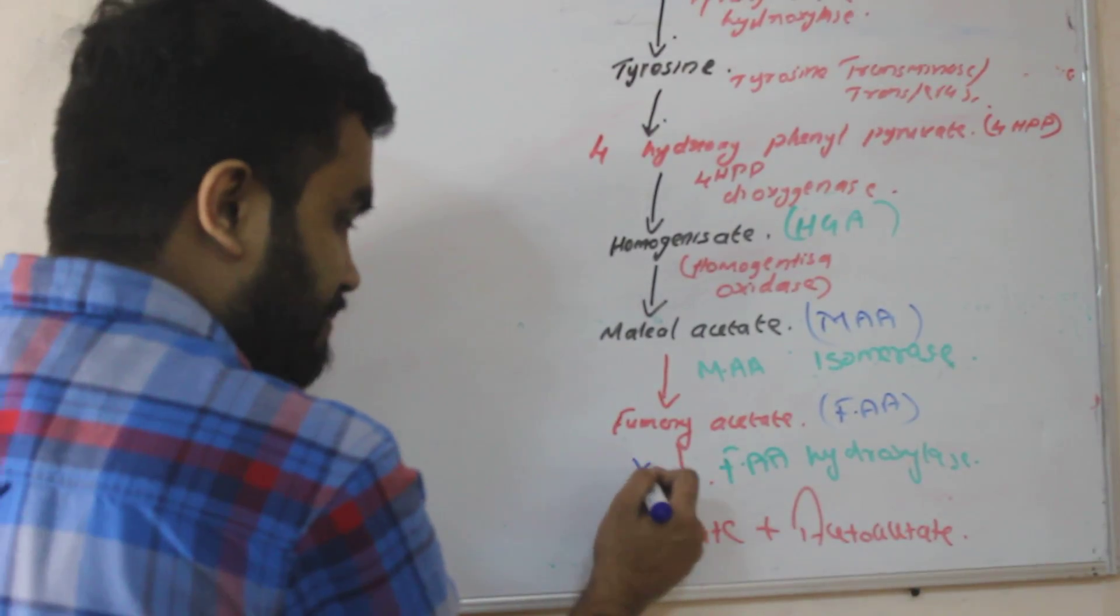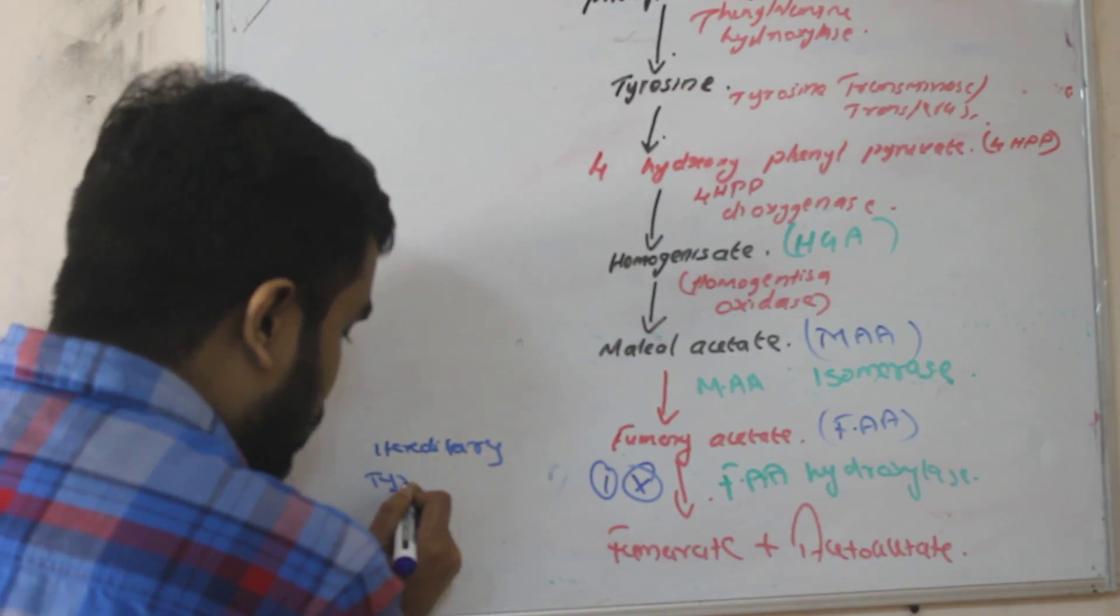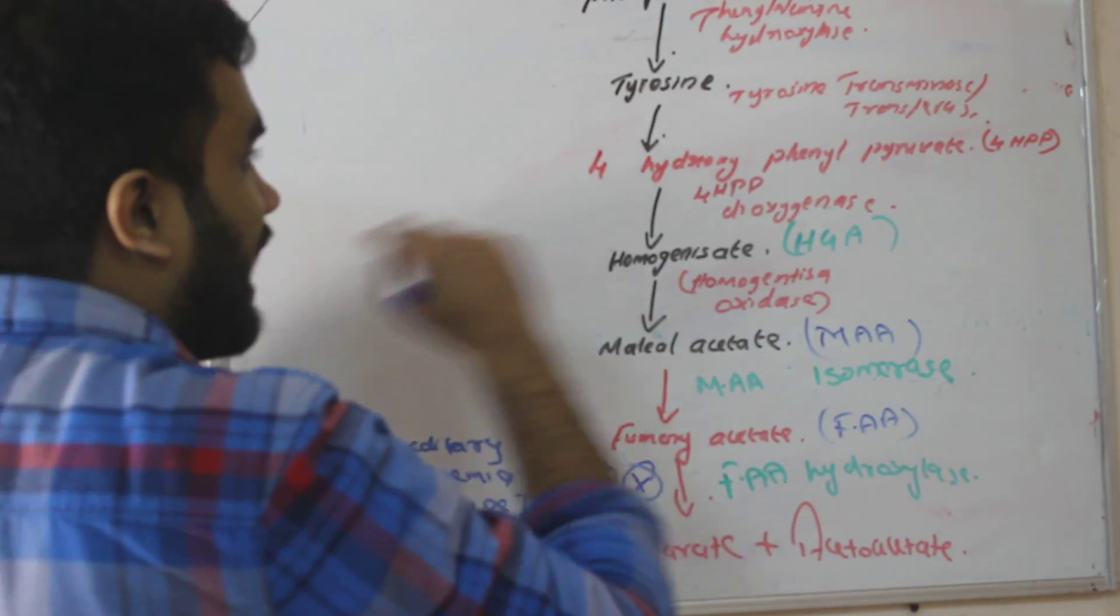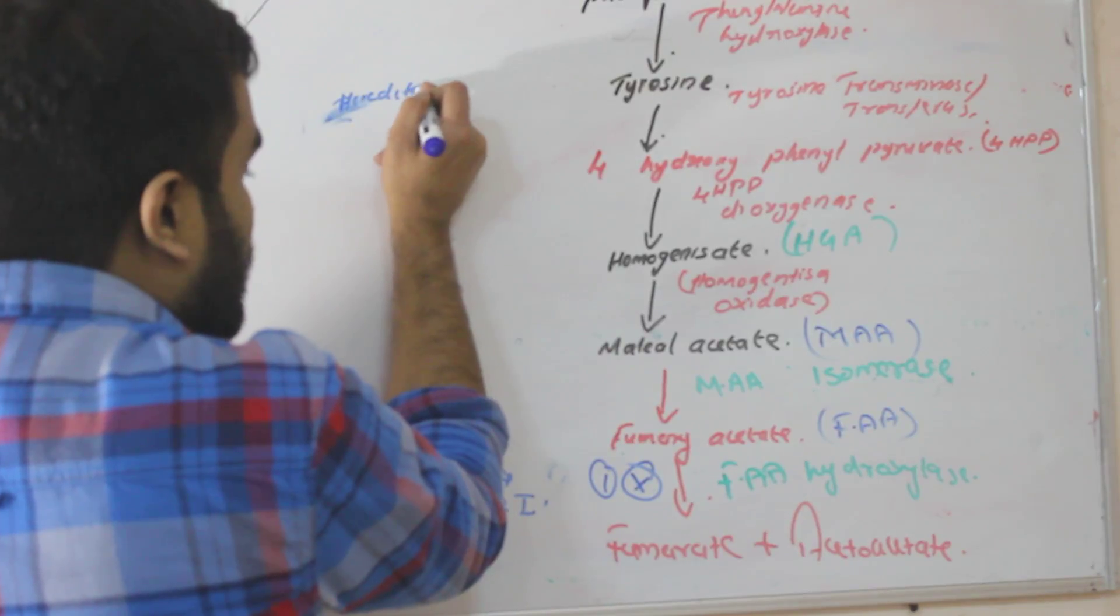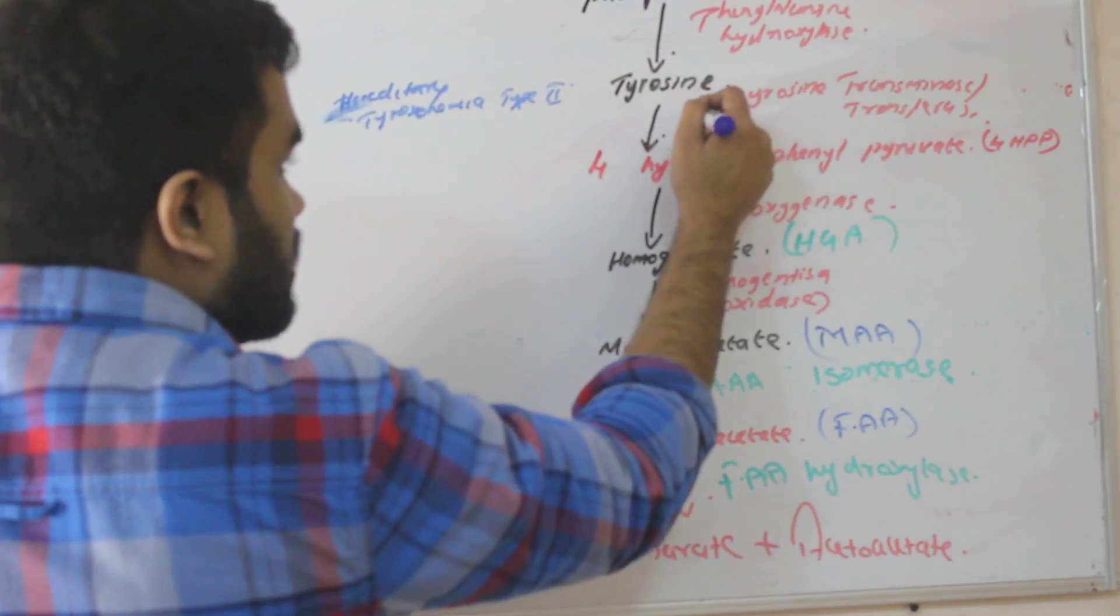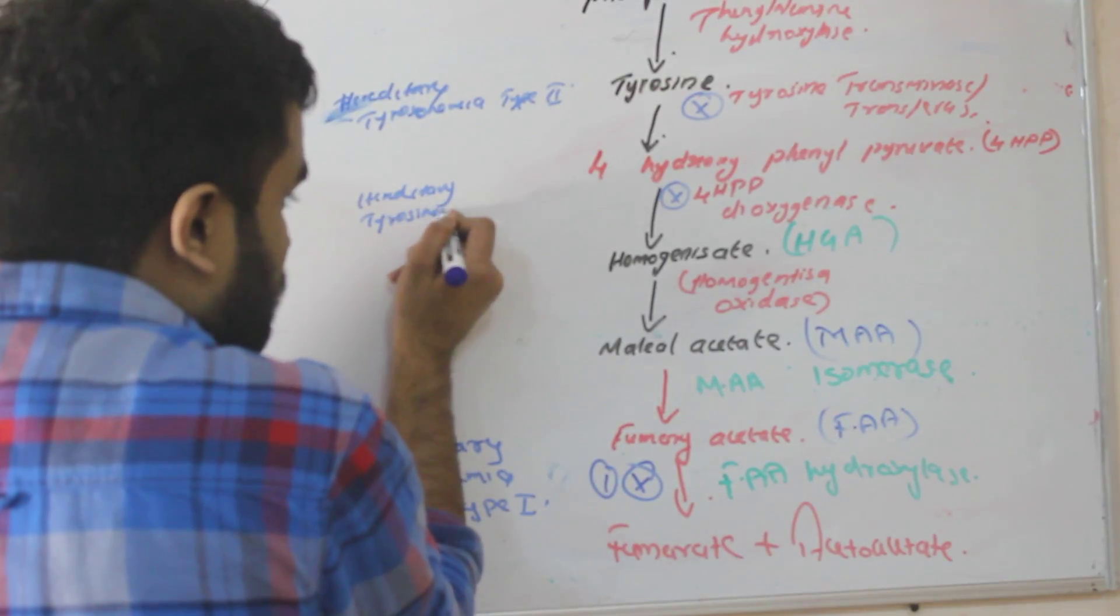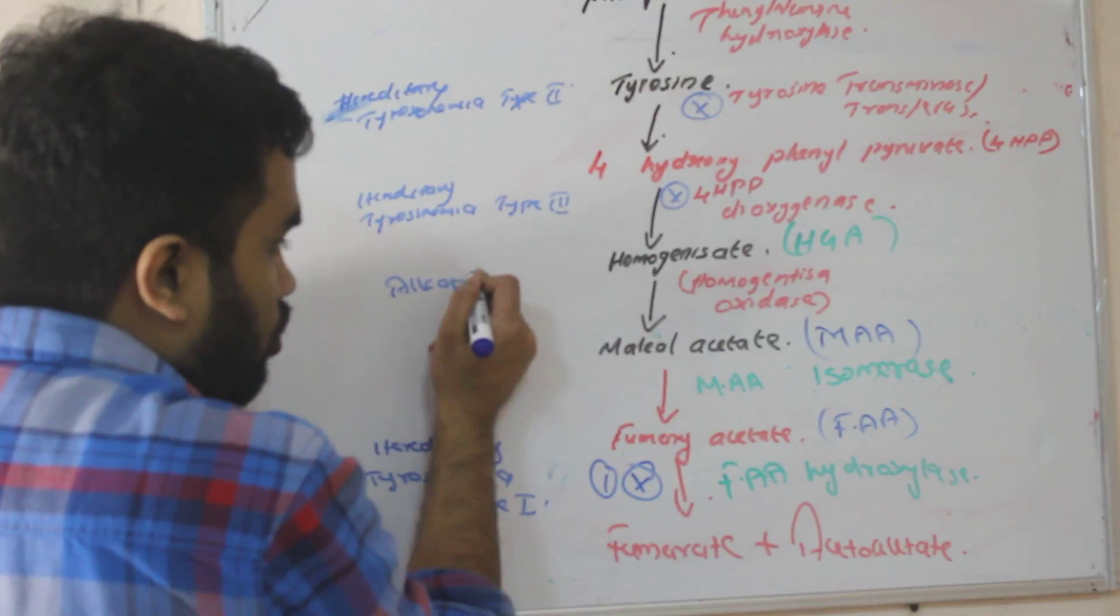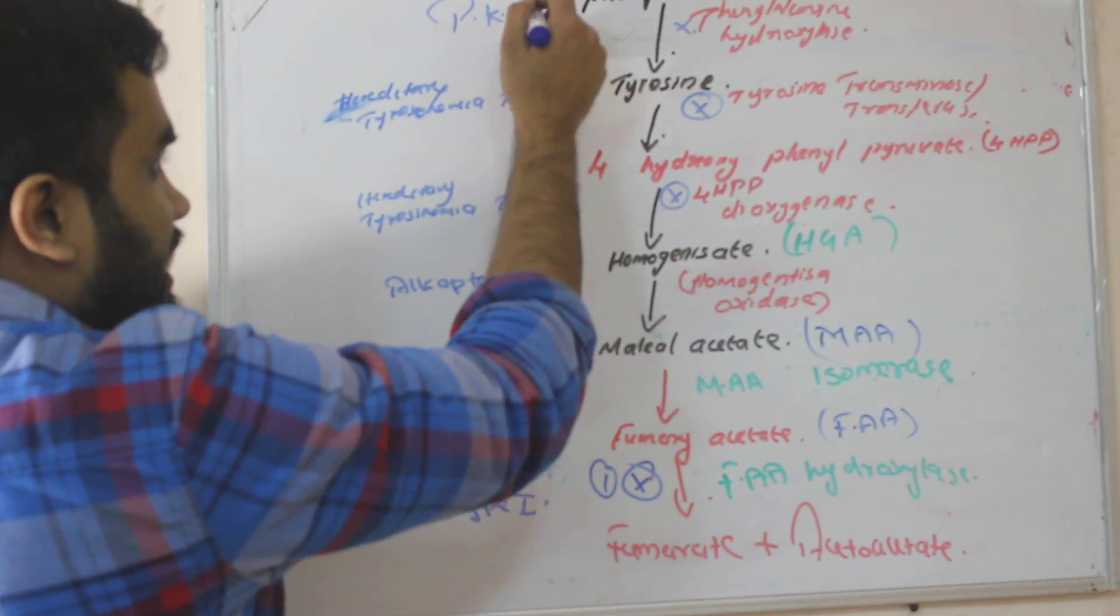If this FA hydroxylase is absent, it will cause hereditary tyrosinemia type 1. If tyrosine transaminase or transaminase is absent, it will cause tyrosinemia type 2. And if this is absent, it will cause hereditary tyrosinemia type 3. This means 4-HPP dioxygenase. If one more, that is oxidase is absent, it will cause alkaptonuria. If this enzyme is absent, we are actually related at PKU, phenylketonuria.